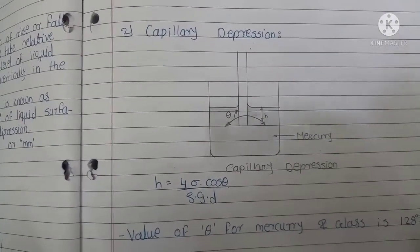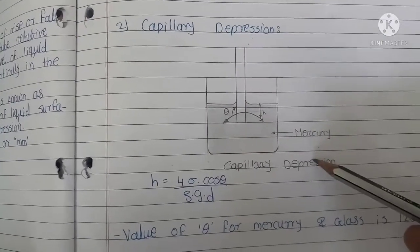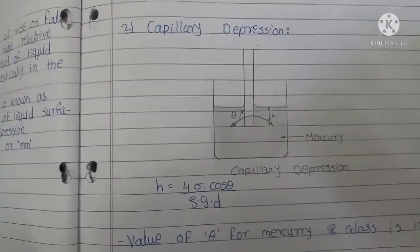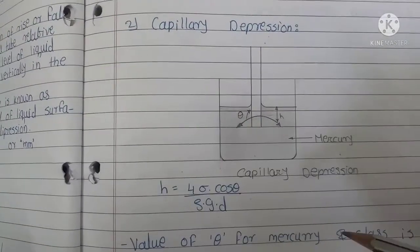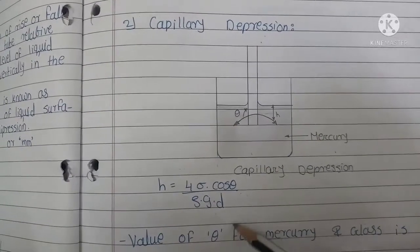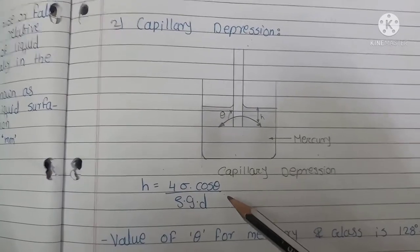Here's an objective question: compare capillary fall with capillary rise. The formula is the same for both, but theta for water is 0 degrees while for mercury it is 128 degrees. This explains the difference in behavior.